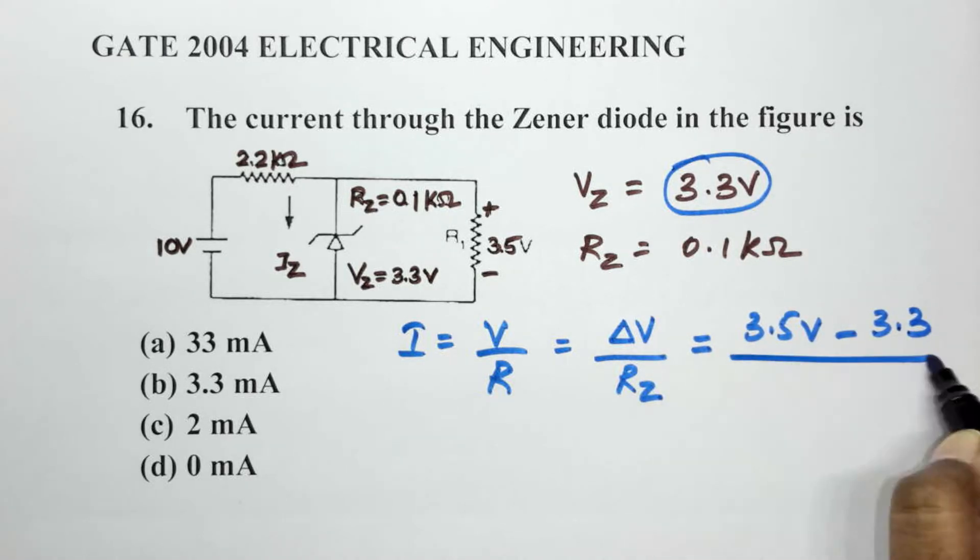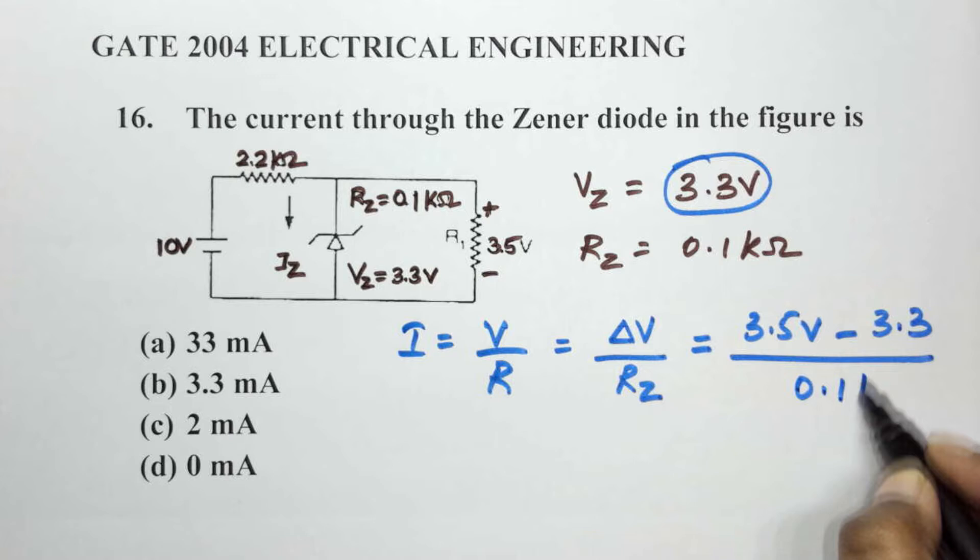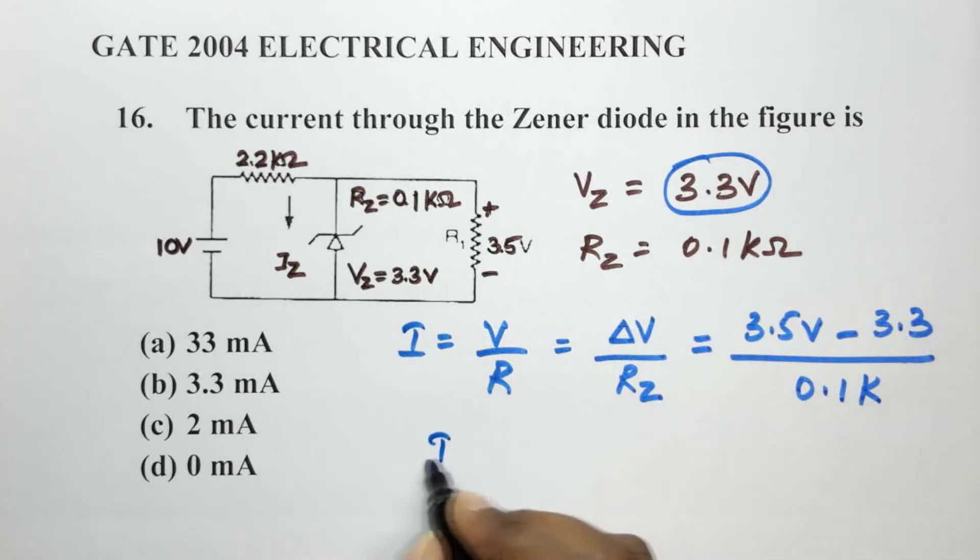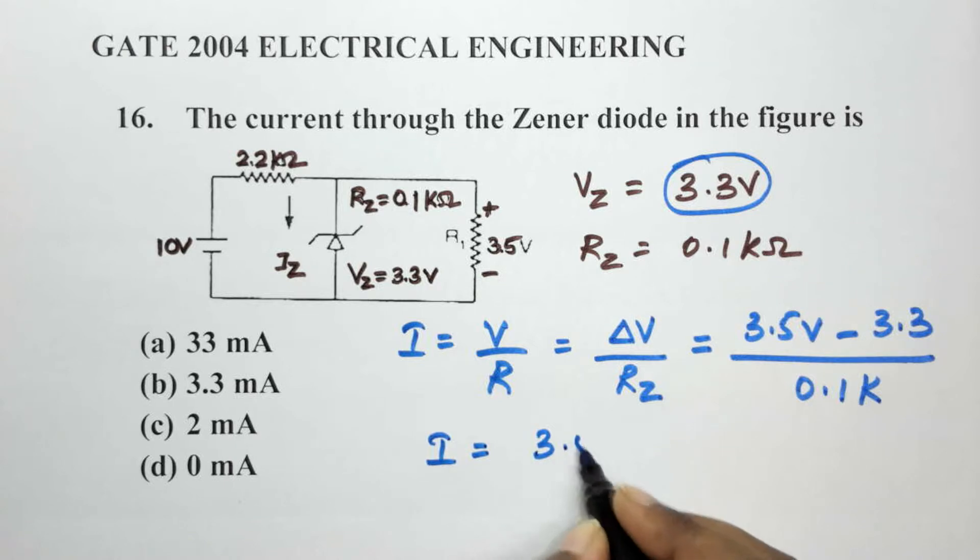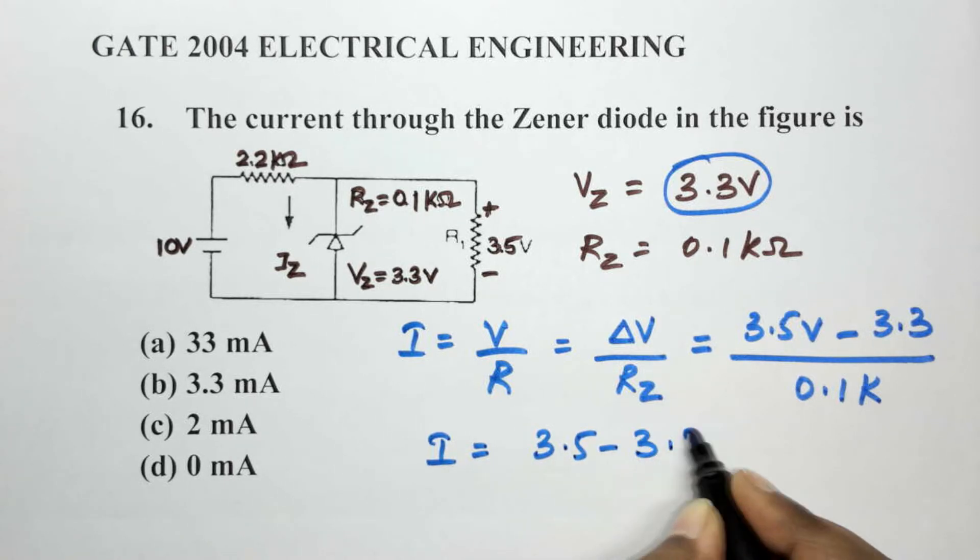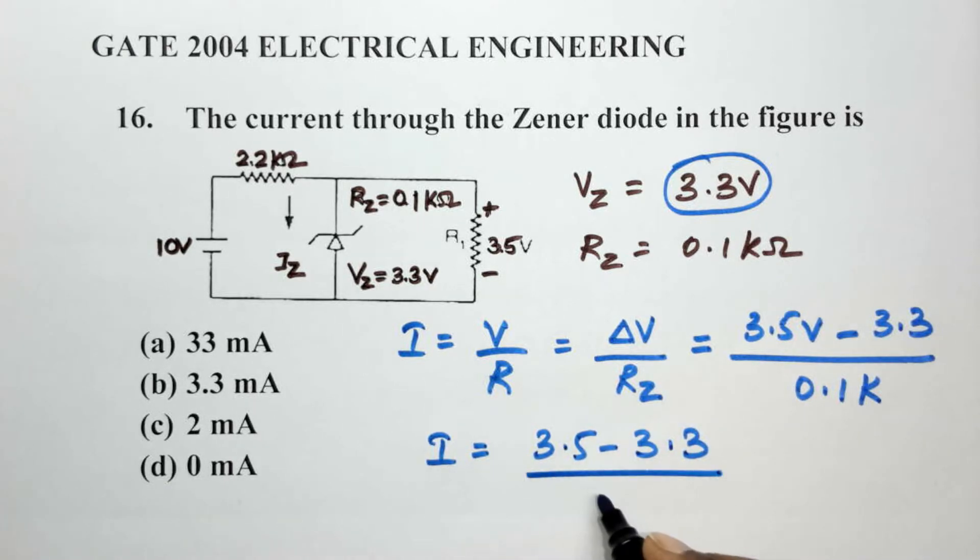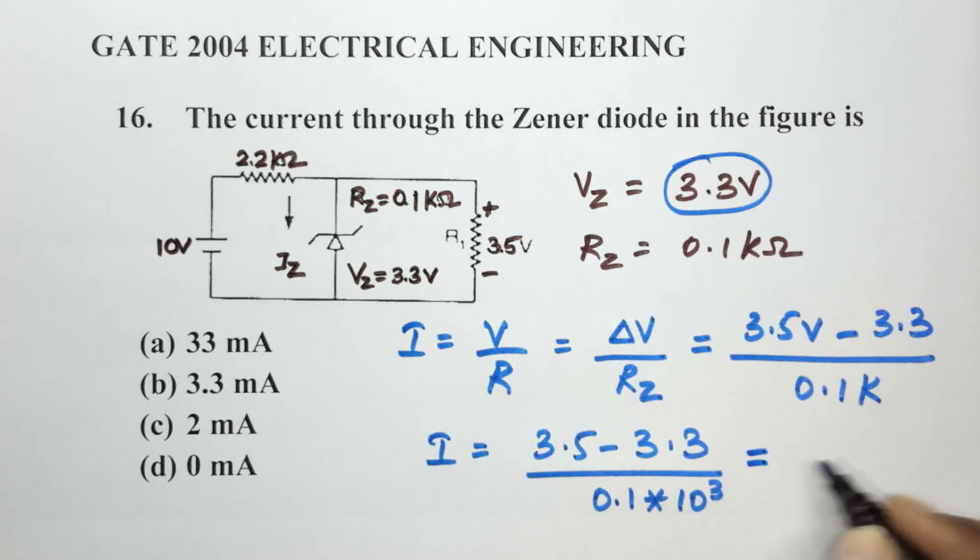Now let's further substitute the values over here. We have 3.5 minus Vz, which is given to us as 3.3, divided by Rz, which is 0.1K. Now if we solve this, you will get a value of 2 into 10 power minus 3.